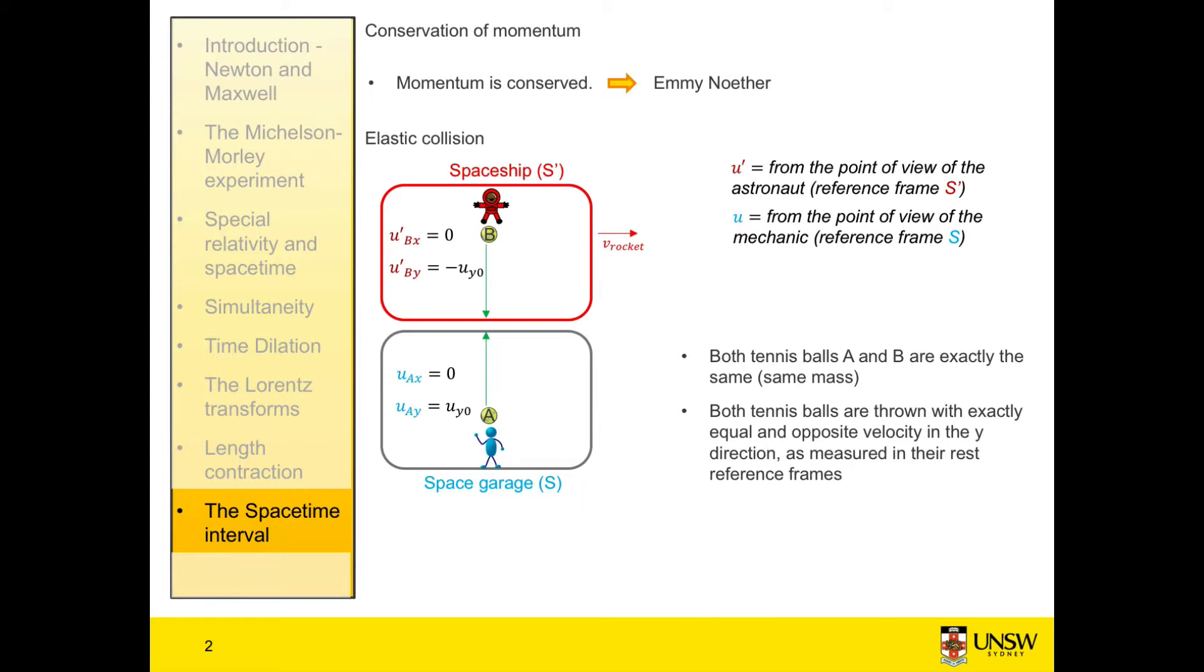The balls collide in a perfectly elastic collision and bounce back towards their original position. The mechanic's ball returns to him with a velocity of negative u_y_0, as measured by him, and the astronaut's with positive u_y_0, as measured by the astronaut.